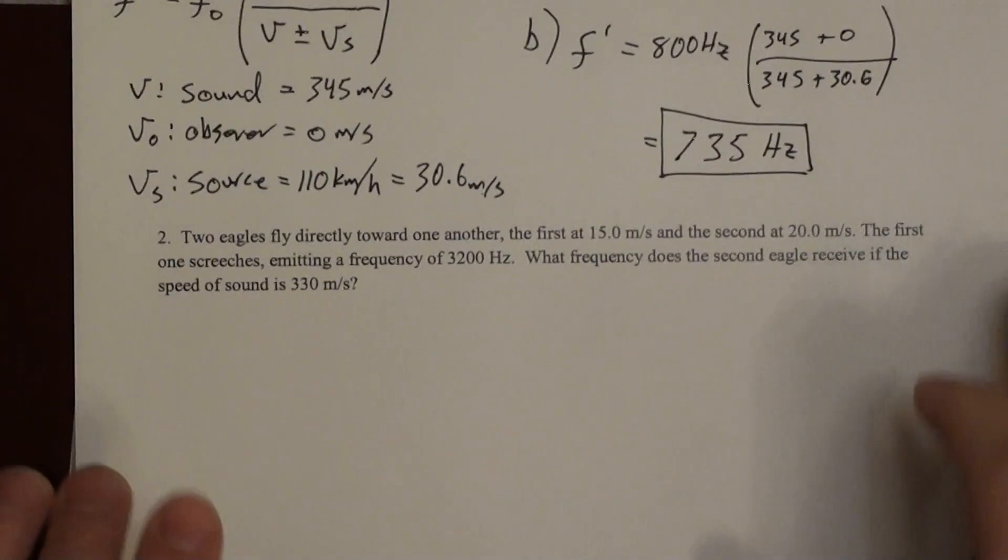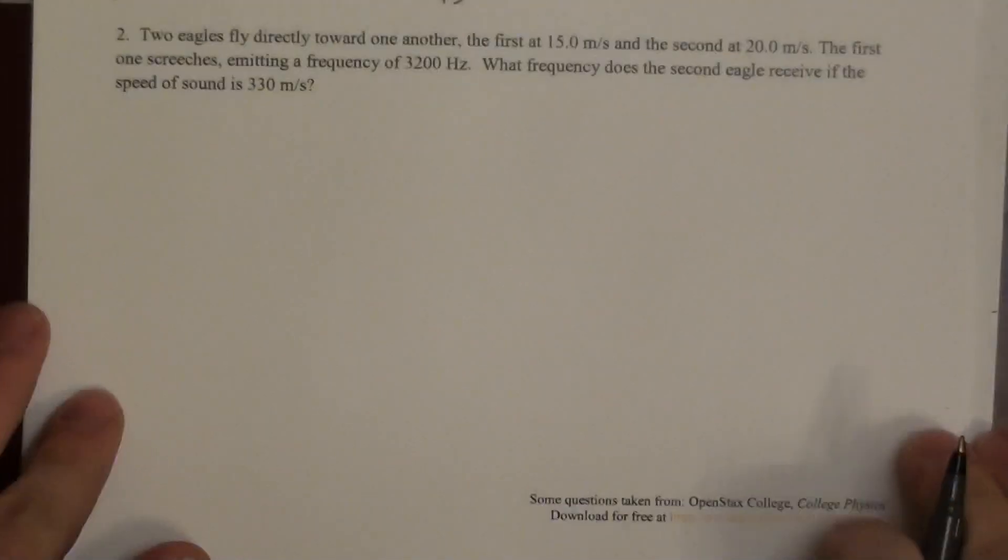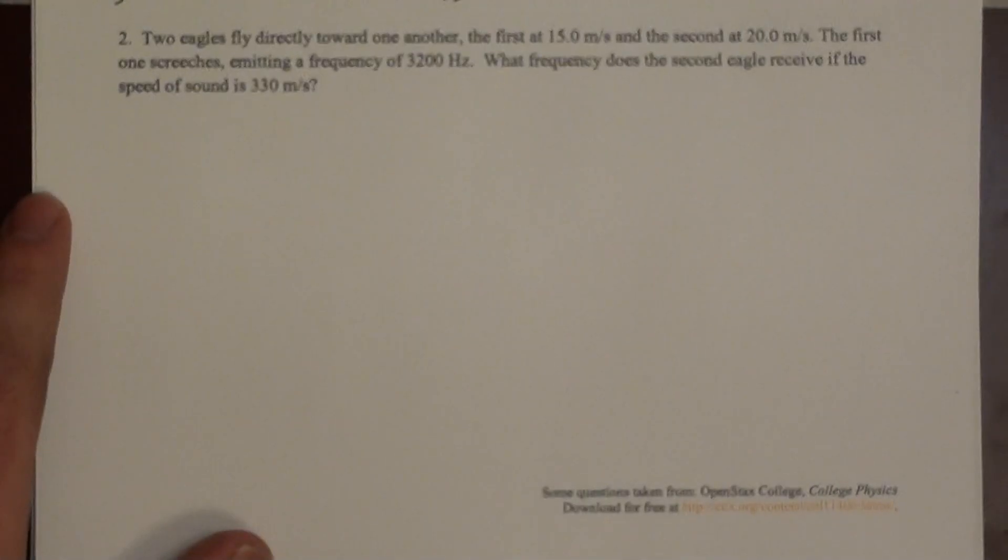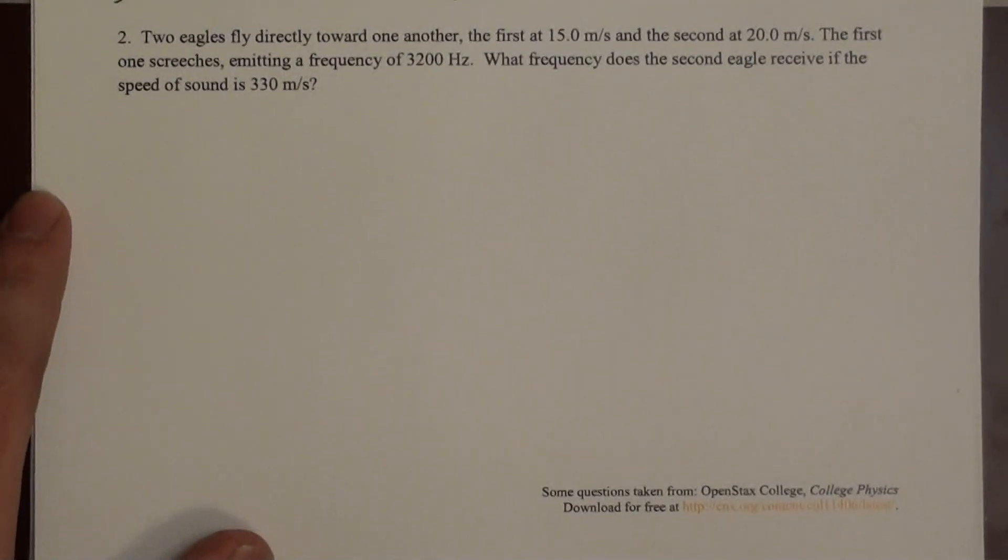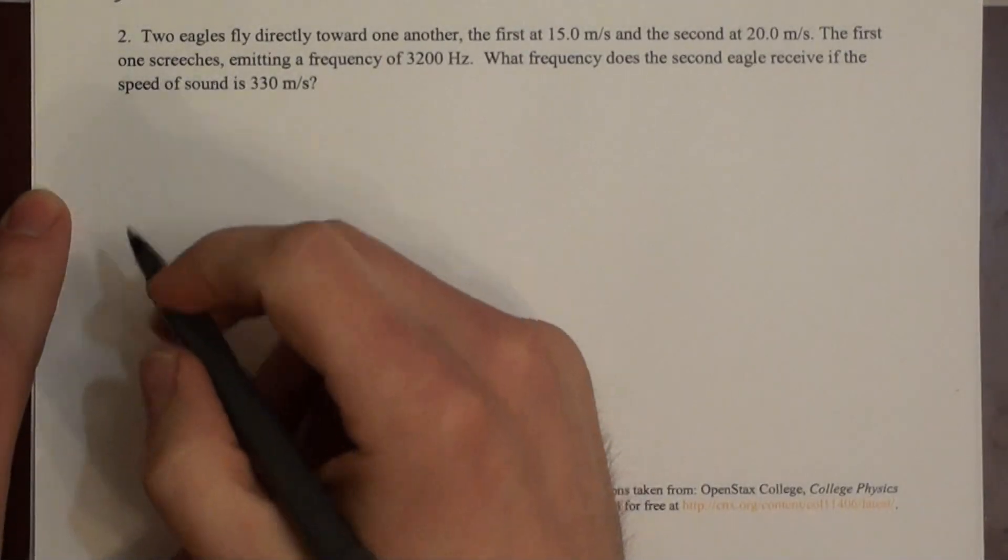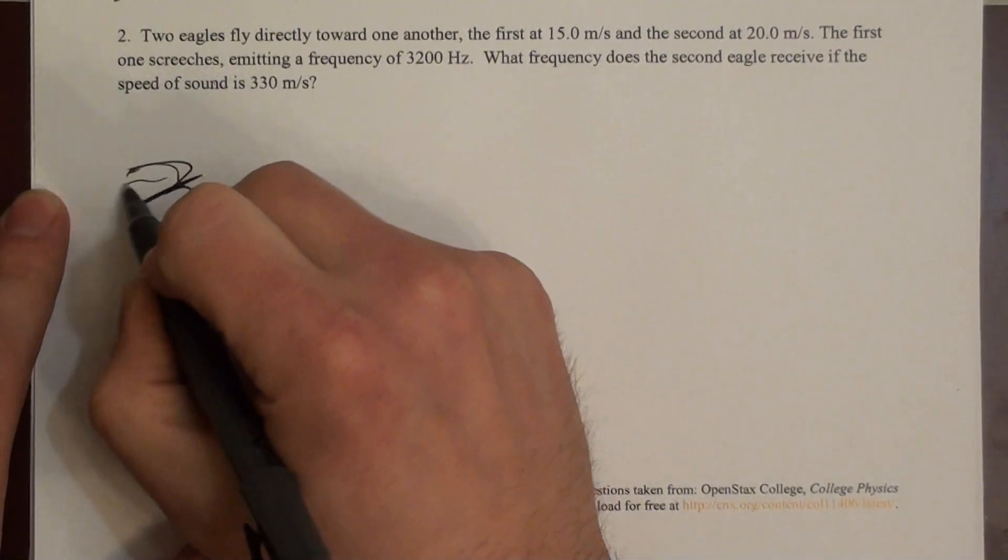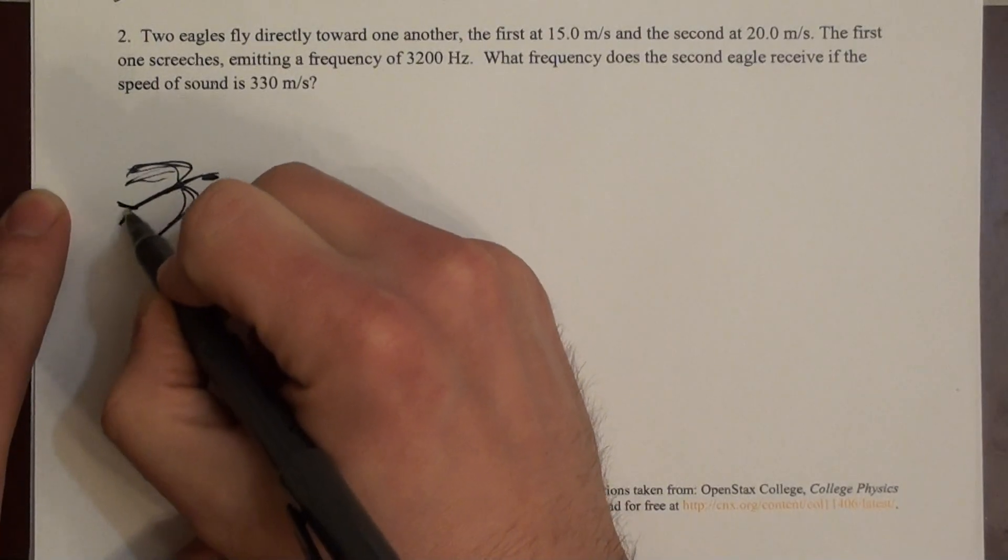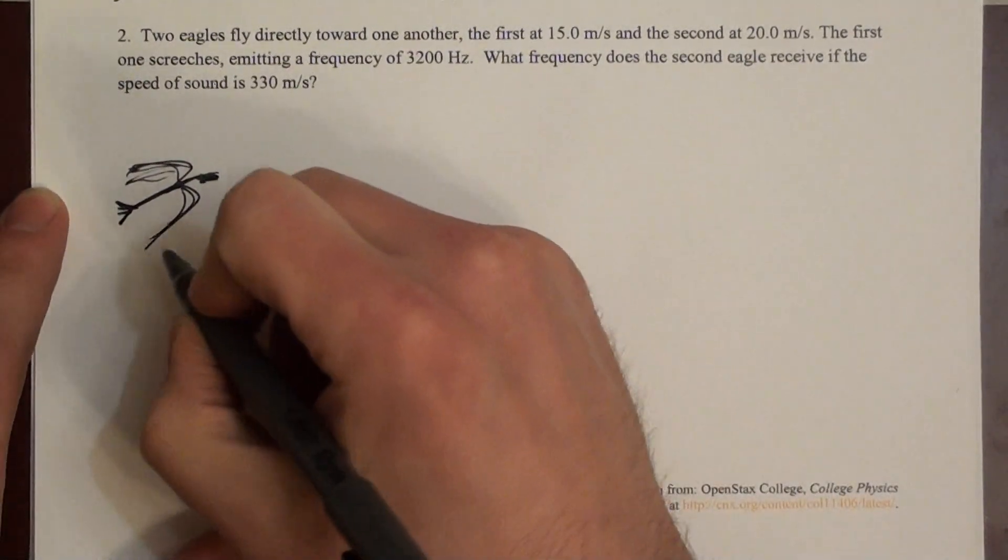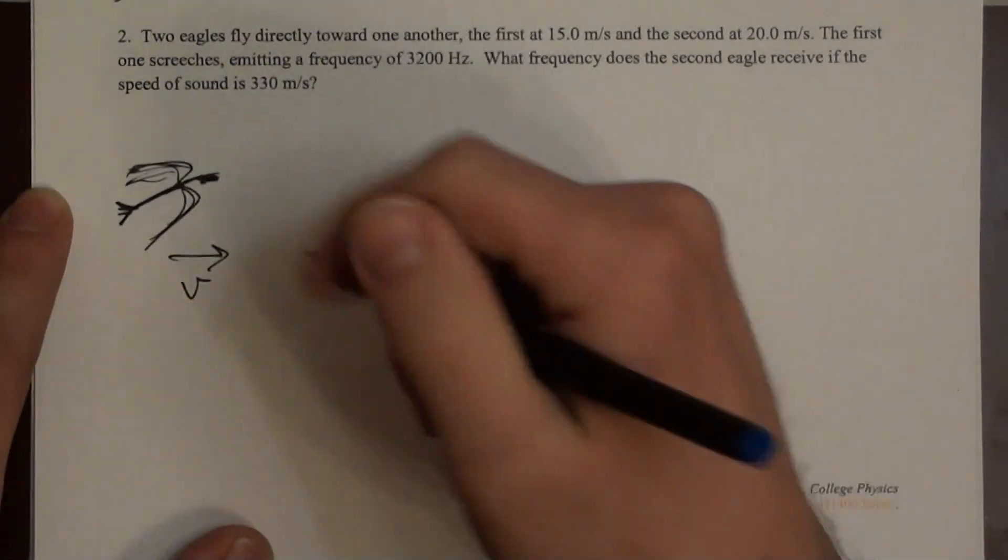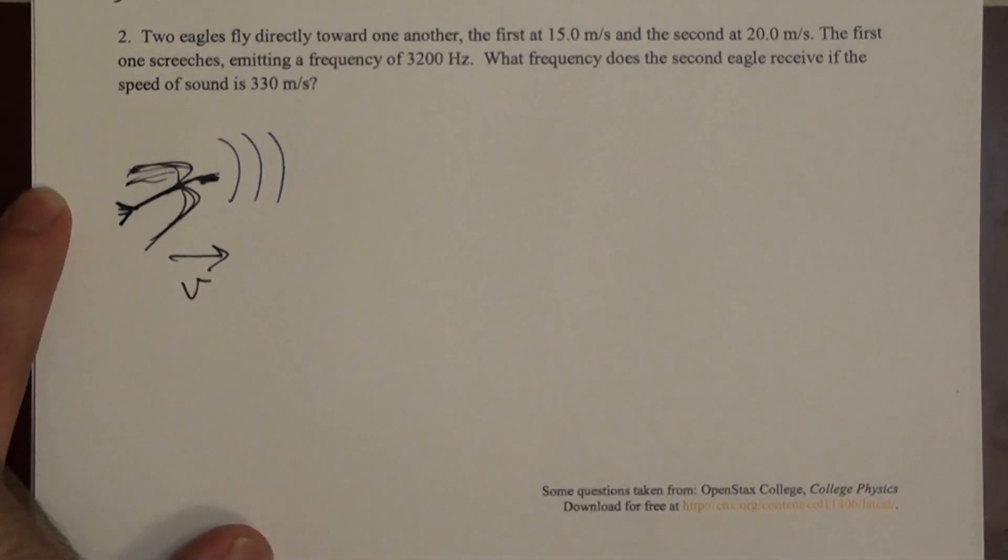The second problem here says that we have two eagles flying directly toward one another. One at 15 meters per second and the other at 20 meters per second. One of the eagles screeches at a particular frequency. What frequency does the second eagle receive? So we can kind of draw this, or we can attempt to at least. So this looks like an eagle if you squint a little bit. And this eagle is flying this direction at some speed. And maybe this is the eagle that is emitting some sound.